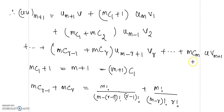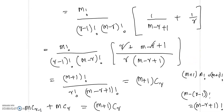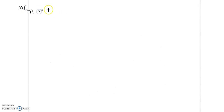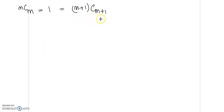Now let us write the last term for m plus 1, which is mC(m+1). Let us find that also. mCm will be equal to mCm, which equals (m+1)C(m+1). And (m+1)C(m+1) equals 1. Therefore I can replace mCm by (m+1)C(m+1).